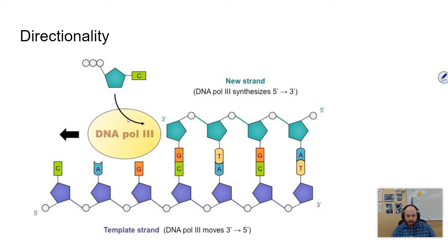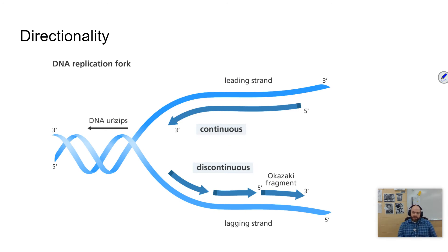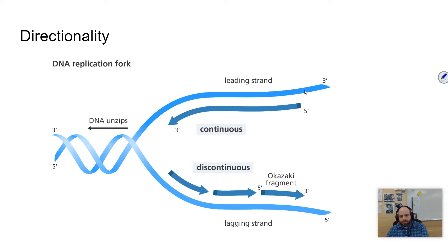This other strand is parallel to it but goes in the opposite direction. We call that anti-parallel — the two strands are parallel to one another, but they're going in opposite directions. That's going to have an effect on how the DNA molecule is replicated. Since the enzymes read from three to five, one of the strands as the enzymes go along is going to be continuous — it's kind of like if you had a roll of paper towels and you rolled it out, writing at the same time in the same direction that the paper towel is going.